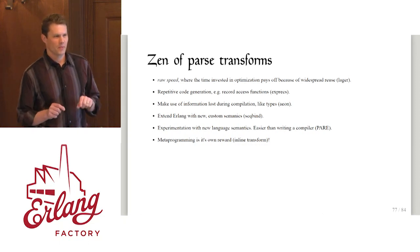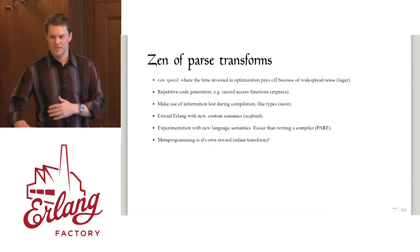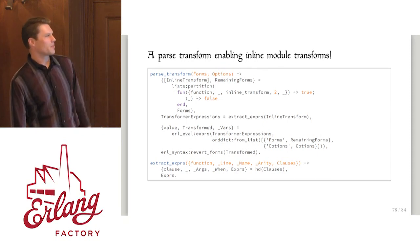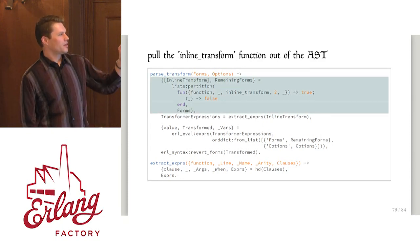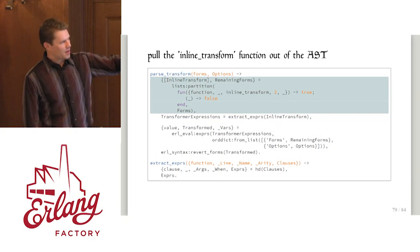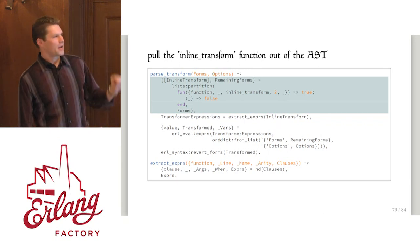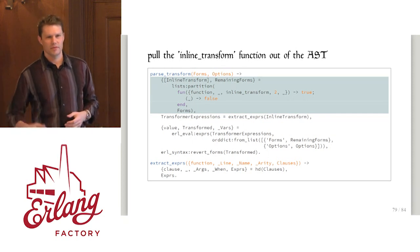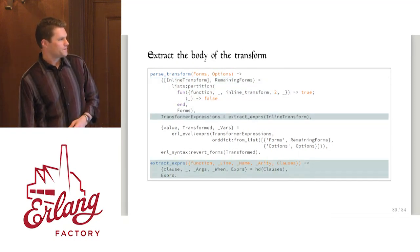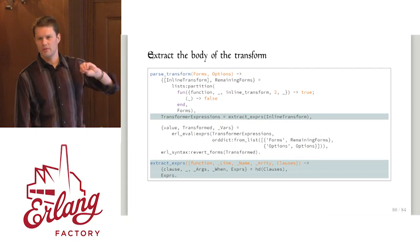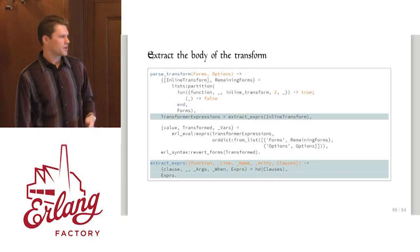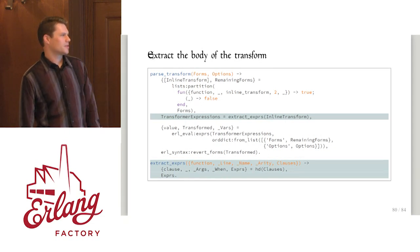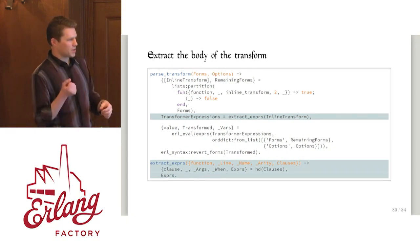In the last few seconds, we'll work up an inline parse transform — a parse transform that lets you write a parse transform that transforms its own module. This is the entire parse transform. What I want to do is look for a function in a module that we'll call inline_transform — it has to take forms and options. I pull that out. After compilation this function won't exist anymore. I want the code from that function definition — I don't need the variables or when clauses; we'll assume there's one clause. I go into the whole function AST and just pull out the expressions.